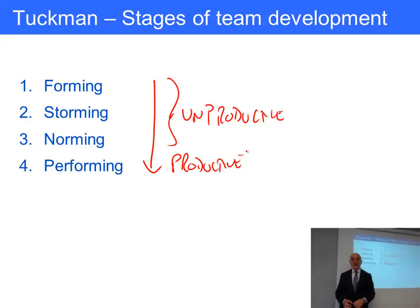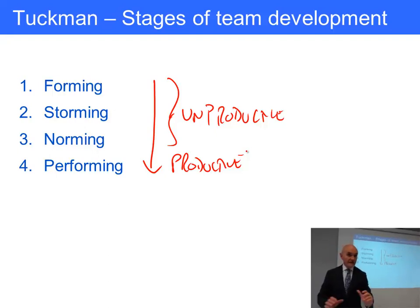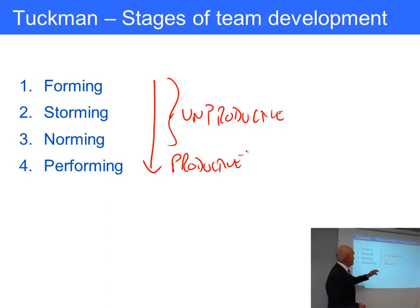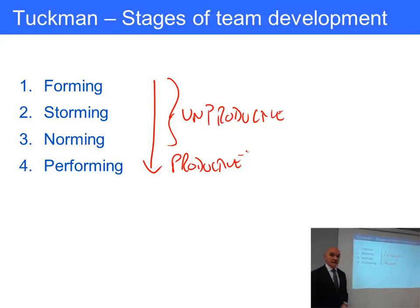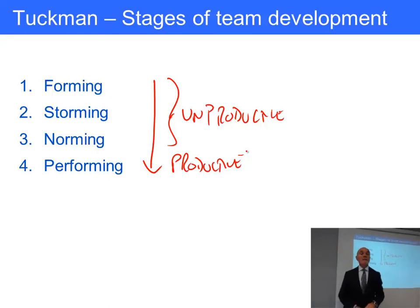Tuckman also said that every time the composition of the group changes — one person leaves, another joins — you get a little disturbance and have to go through the stages again. There's a little bit of inefficiency: the new person has to come in, there's a bit of storming about how they fit into the existing hierarchy, and they have to learn what the norms are while also wanting to influence them.